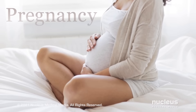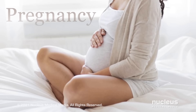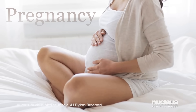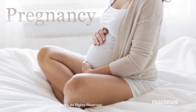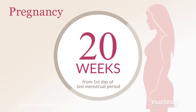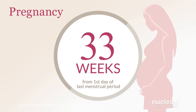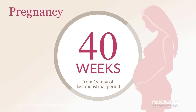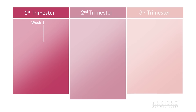Pregnancy is the time period during which a baby develops inside your uterus. It usually lasts about 40 weeks, starting from the first day of your last menstrual period. These 40 weeks are grouped into three segments, called trimesters.